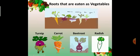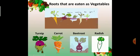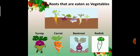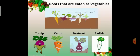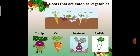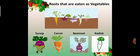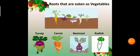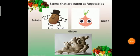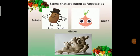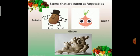TURNIP, turnip. CARROT, carrot. BEETROOT, beetroot and RADISH, radish. These are roots vegetables. Stems that are eaten as vegetables. Potato, onion and ginger are stem vegetables. They grow under the soil but they are special stems, not root.